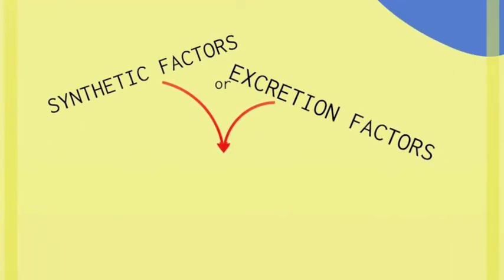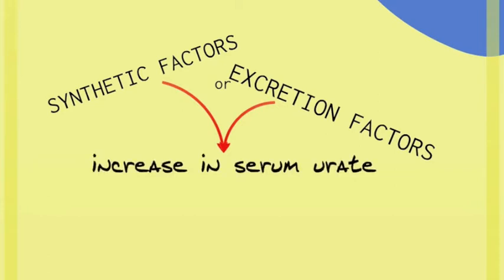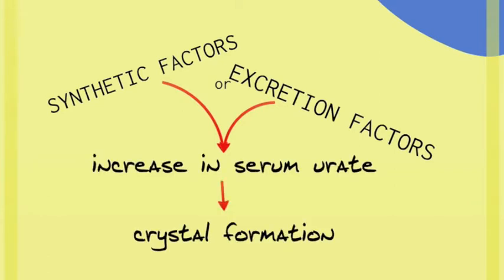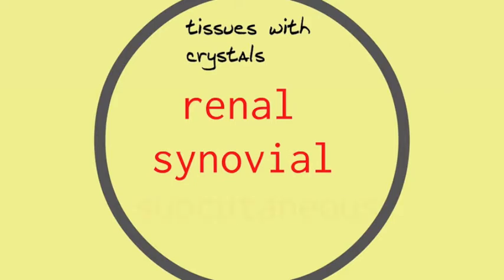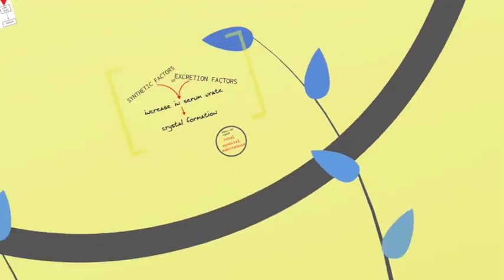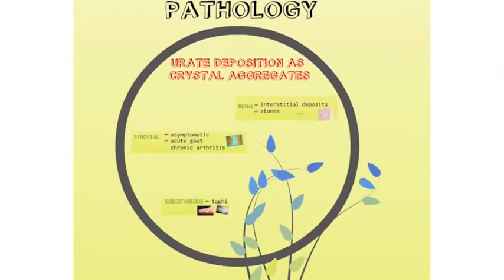It is often a number of factors that will cause increased serum uric acid. Crystal formation is a consequence in some people with hyperuricemia, and in those who have crystal formation, the crystals form and are deposited in the kidney, synovial and subcutaneous tissues. It is these crystals that cause the pathology.